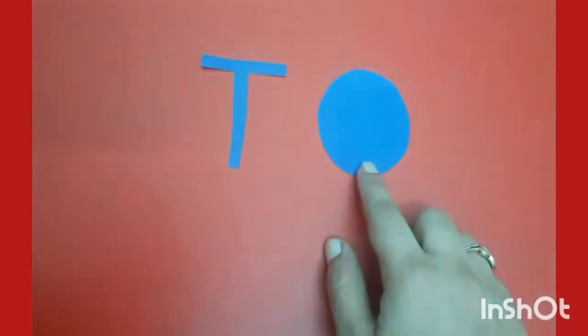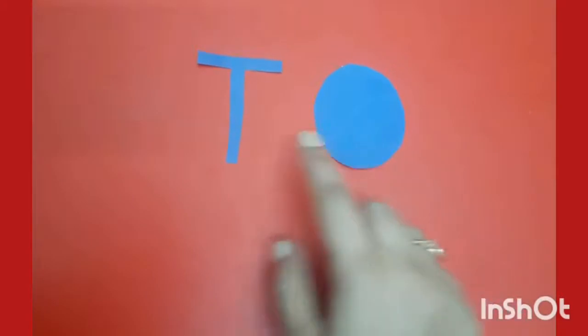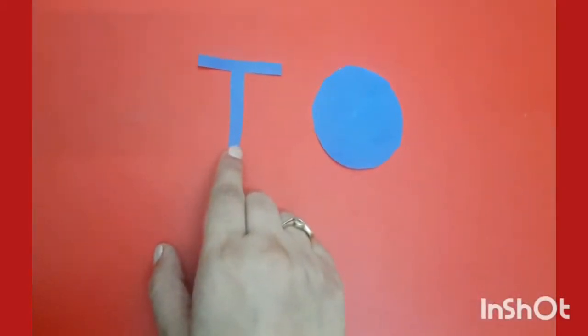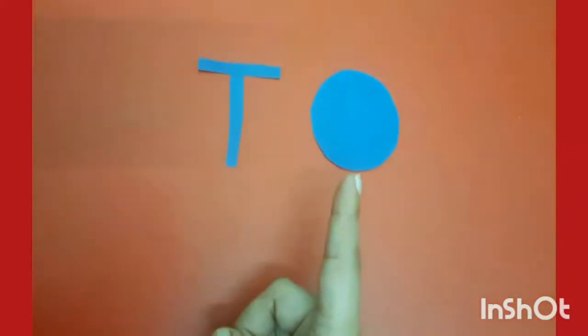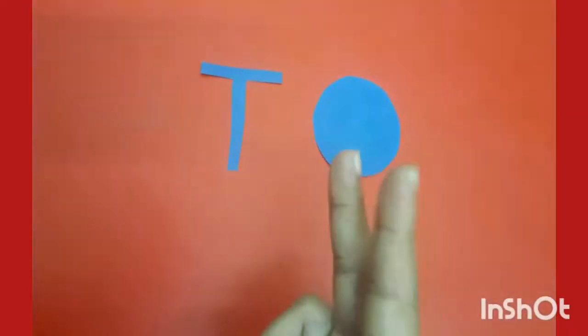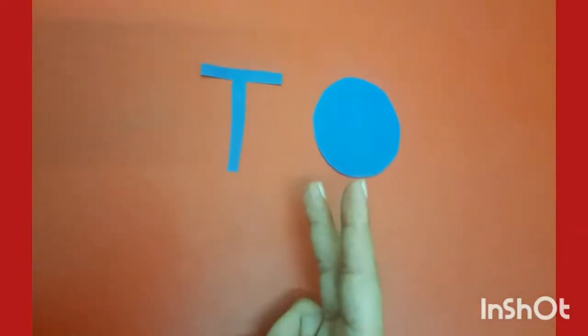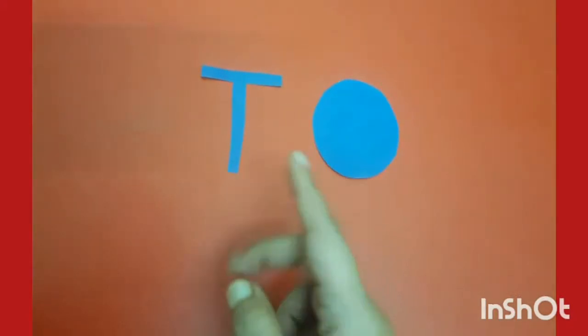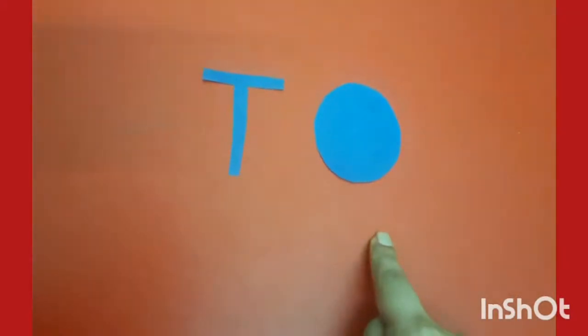My dear kids, as you already know, O stands for ones and T stands for tens. When I speak a one-digit number, you have to write it under the ones. When I speak two-digit numbers, you have to write under both tens and ones.